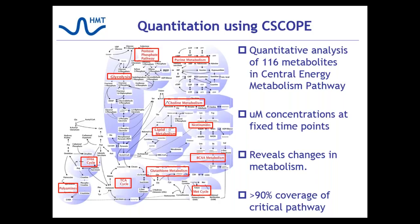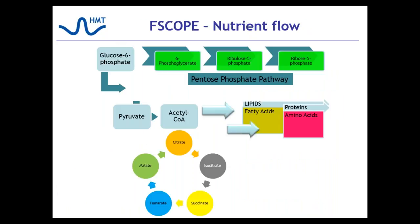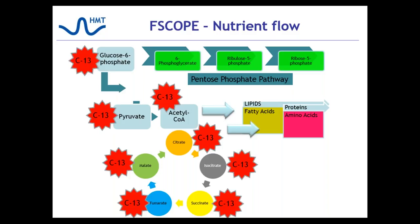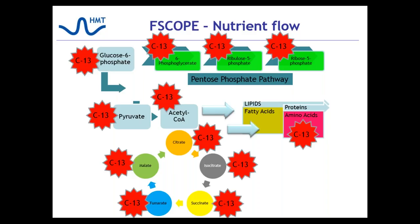C-SCOPE is capable of detecting and measuring over 90% of the metabolites in these energy pathways using the superior selectivity and resolution offered by capillary electrophoresis. F-SCOPE measures a subset of these for isotope analysis. Often Laura will have clients start with C-SCOPE to observe changes in cellular metabolism, then move to F-SCOPE to quantitate and discover the precise movement of nutrients. With unequaled chromatography separation and state-of-the-art mass spectrometry, F-SCOPE can measure isotopomer distribution in over 50 metabolites involved in central energy metabolism, including the TCA cycle, pentose phosphate pathway, and amino acids.